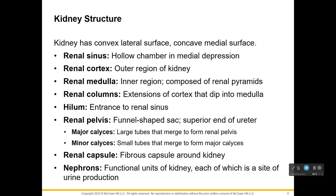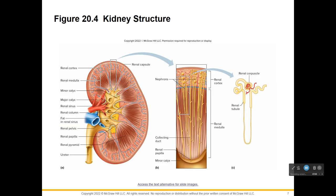There is a renal pelvis, a funnel-shaped sac that is the superior end of the ureter. You have major and minor calyces — the minor calyces merge to form the major calyces, and the major calyces merge to form the renal pelvis, which leads to the ureter. The renal capsule is the fibrous capsule around the kidney. The nephron is key — star this word. It is the functional unit of the kidney and where urine production happens. The minor calyces merge to form the major, which eventually leads to the ureter.